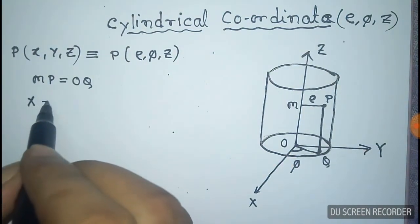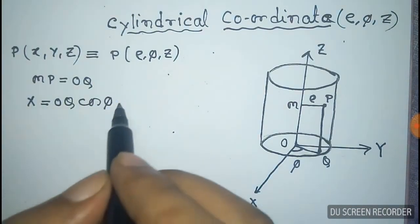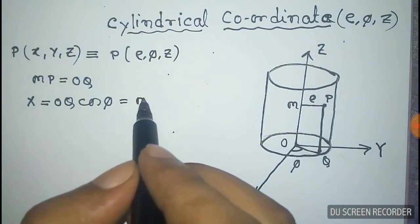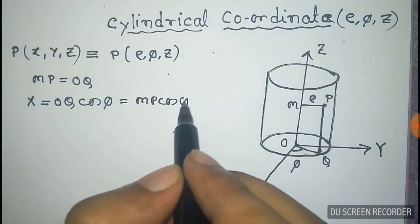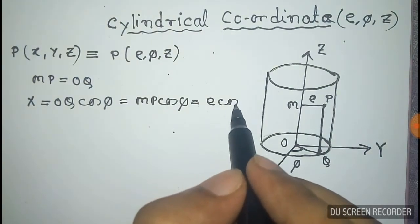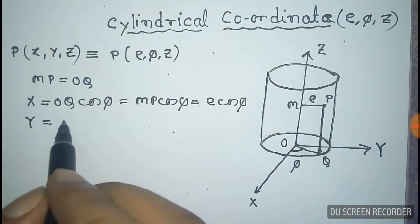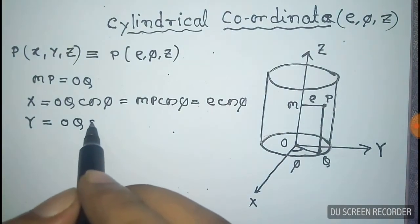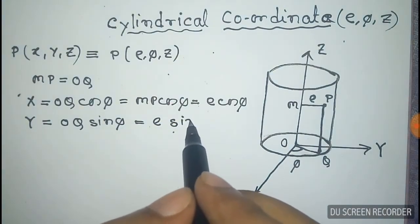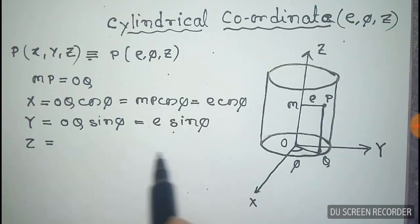Now we have to derive the relations. That's X equal to OQ cos phi from the geometry, and OQ is equal to MP cos phi, and MP is rho, so this is rho cos phi. That's equal to X. And Y is equal to OQ sin phi, that's equal to rho sin phi.